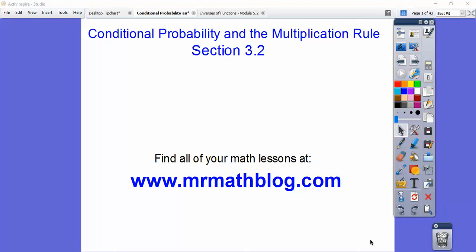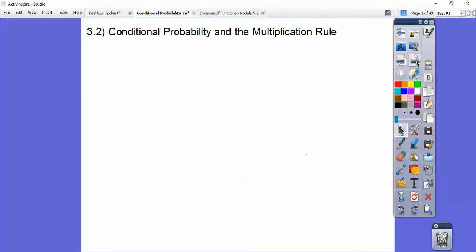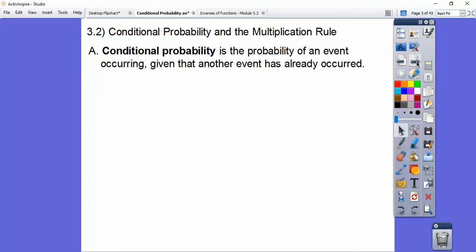Alright gang, this lesson is conditional probability and the multiplication rule. This is section 3-2 in our statistics book, so conditional probability and the multiplication rule.